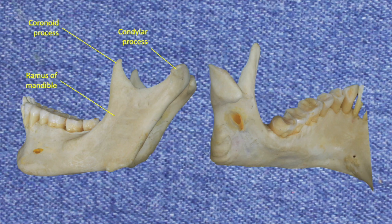Looking now at the medial side of the mandible, we see that there is a foramen, the mandibular foramen. To enter the infratemporal fossa, we will need to remove the coronoid and the condylar processes. In addition, we will need to cut through the ramus of the mandible while keeping above the mandibular foramen so as not to injure the structures that enter there. Let's do this now.